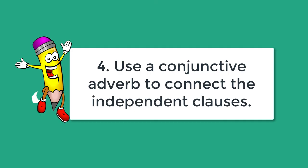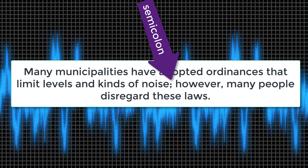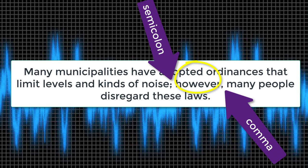The fourth way to fix a comma splice is to use a conjunctive adverb. Conjunctive adverbs are technically conjunctions, but the punctuation differs. For example: many municipalities have adopted ordinances that limit levels and kinds of noise; however, many people disregard these laws. The conjunctive adverb is 'however,' and we follow the punctuation rule when a conjunctive adverb connects two independent clauses: use a semicolon and a comma following the conjunctive adverb.